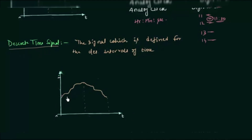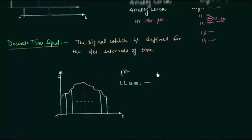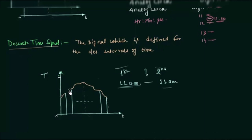By discretized, I mean we are measuring temperature at 11 o'clock daily. This point is 11am of the first day, this is the second day, and so on up to the last day. We only have values at each day's 11am. What happens between 11am of the first day and 11am of the second day? We don't know — we haven't monitored it, so that data is not available. We remove those in-between values, and the same applies for all other days of the month. This is how a discrete time signal looks.